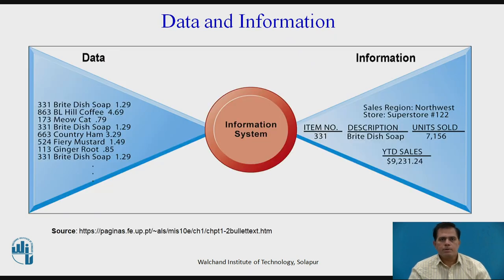In this diagram, on the left-hand side under data, raw data is collected from different databases. Our information system processes and shapes this data into meaningful information. This example is taken from a supermarket where the customer purchases items and the item names are recorded in the market.